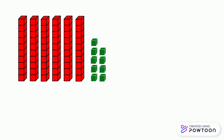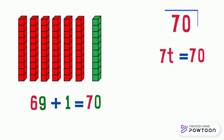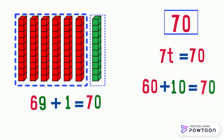Here we have 6 tens and 9 ones — it represents the number 69. Add 1 one and we get 10 ones. Then replace 10 ones by 1 ten. Now we have obtained 7 tens, which represents the number 70. Notice that 60 plus 10 equals 70.